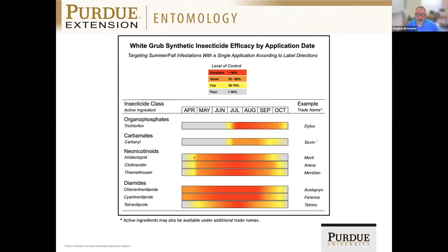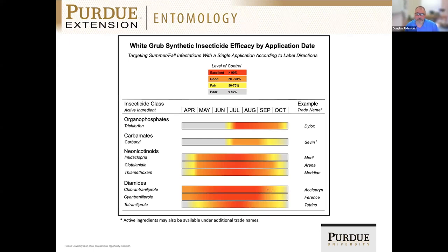Neonicotinoids provide good control as early as early May — if you put that application down, it could provide control of white grubs that don't appear until July. That's what I mean by a preventive application. The diamides — at least chlorantraniliprole and cyantraniliprole — really take that to the extreme; you could even push that window further back, though I don't recommend it. They'll provide really good control preventively through early curatively and a little bit into the later curative window, but their efficacy drops off as we get into the third instar grubs appearing in late summer and early fall.